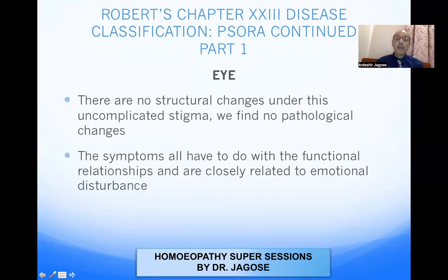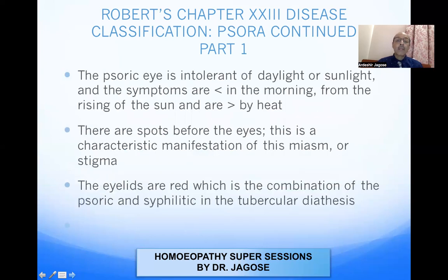Eye symptoms: there are no structural changes under this uncomplicated stigma — in SORA, only functional disturbances are found. The symptoms all have to do with functional relationships and are closely related to emotional disturbances, just like vertigo, which is also aggravated by emotional disturbances. The SORIC eye is intolerant of daylight or sunlight, and the symptoms are worse in the morning from the rising of the sun and better by heat. There are spots before the eyes — a characteristic manifestation of this miasm.